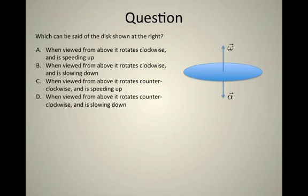We could ask which of the four descriptions here is correctly describing the situation. Is this a disk which when viewed from above is rotating clockwise but speeding up, rotating clockwise but slowing down, rotating counterclockwise but speeding up, or rotating counterclockwise but slowing down?